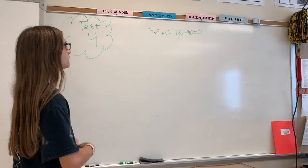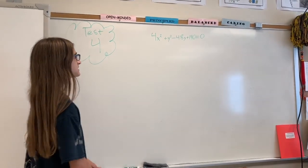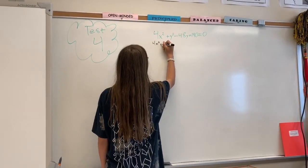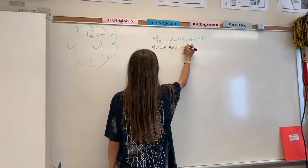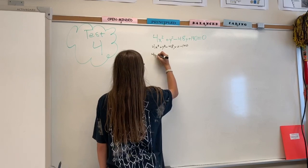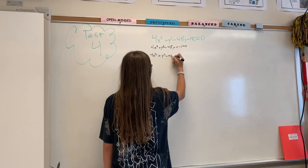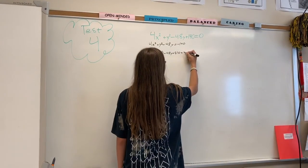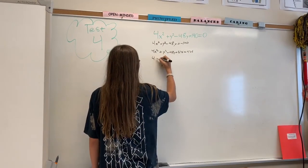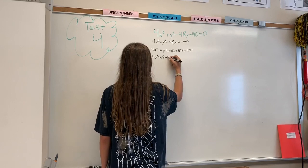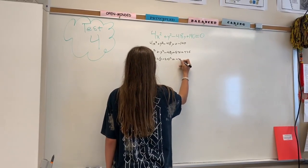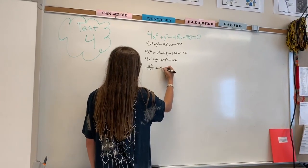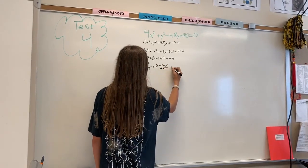Okay, so here we have test 4, converting an ellipse from general form to graphing form. We can tell it's an ellipse because the signs on both the a and c terms are positive. The first step is to move 140 to the other side, giving 4x squared plus y squared minus 48y equals negative 140. Then complete the square for the y term: half of 48 is 24, and 24 squared is 576. Adding 576 to both sides gives 436 on the right. Factoring gives 4x squared plus (y minus 24) squared equals 436. Dividing both sides by 436, and 436 divided by 4 equals 109, so the final form is x squared over 109 plus (y minus 24) squared over 436 equals 1.